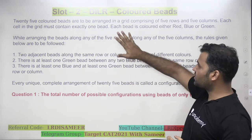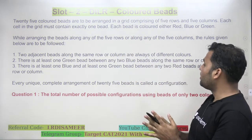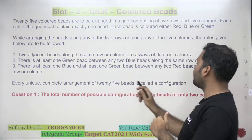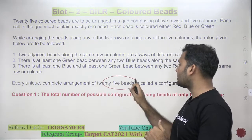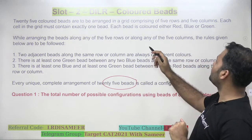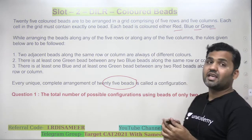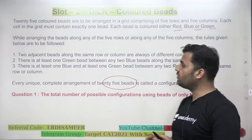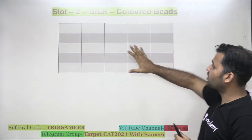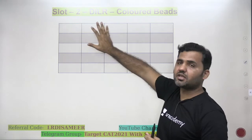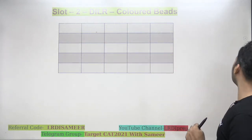In this particular set, the instructions are not much. What you are doing is: you have a total of 25 beads of 3 colors — red, blue, and green — and you are supposed to place them in a 5x5 matrix with 3 conditions in mind.